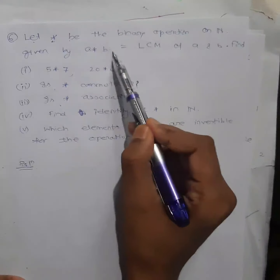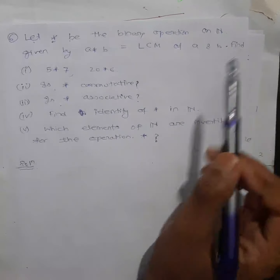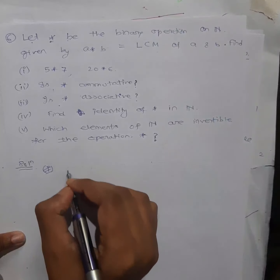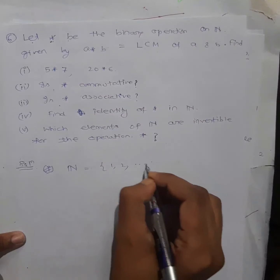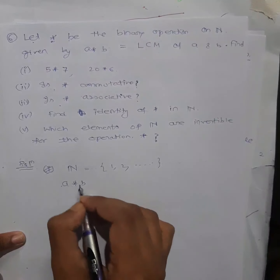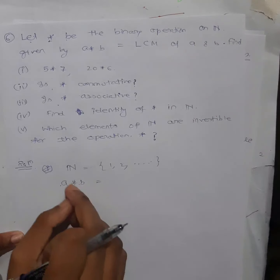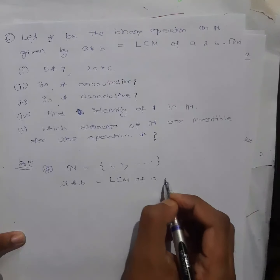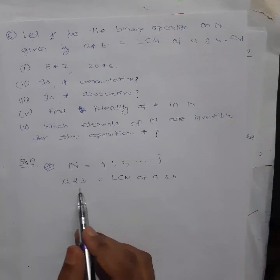If your input is A and B, output will be LCM of those elements. Now the set is the set of natural numbers, and the operation between two elements taken from this set is LCM of A and B. So your output will always be LCM of A and B.